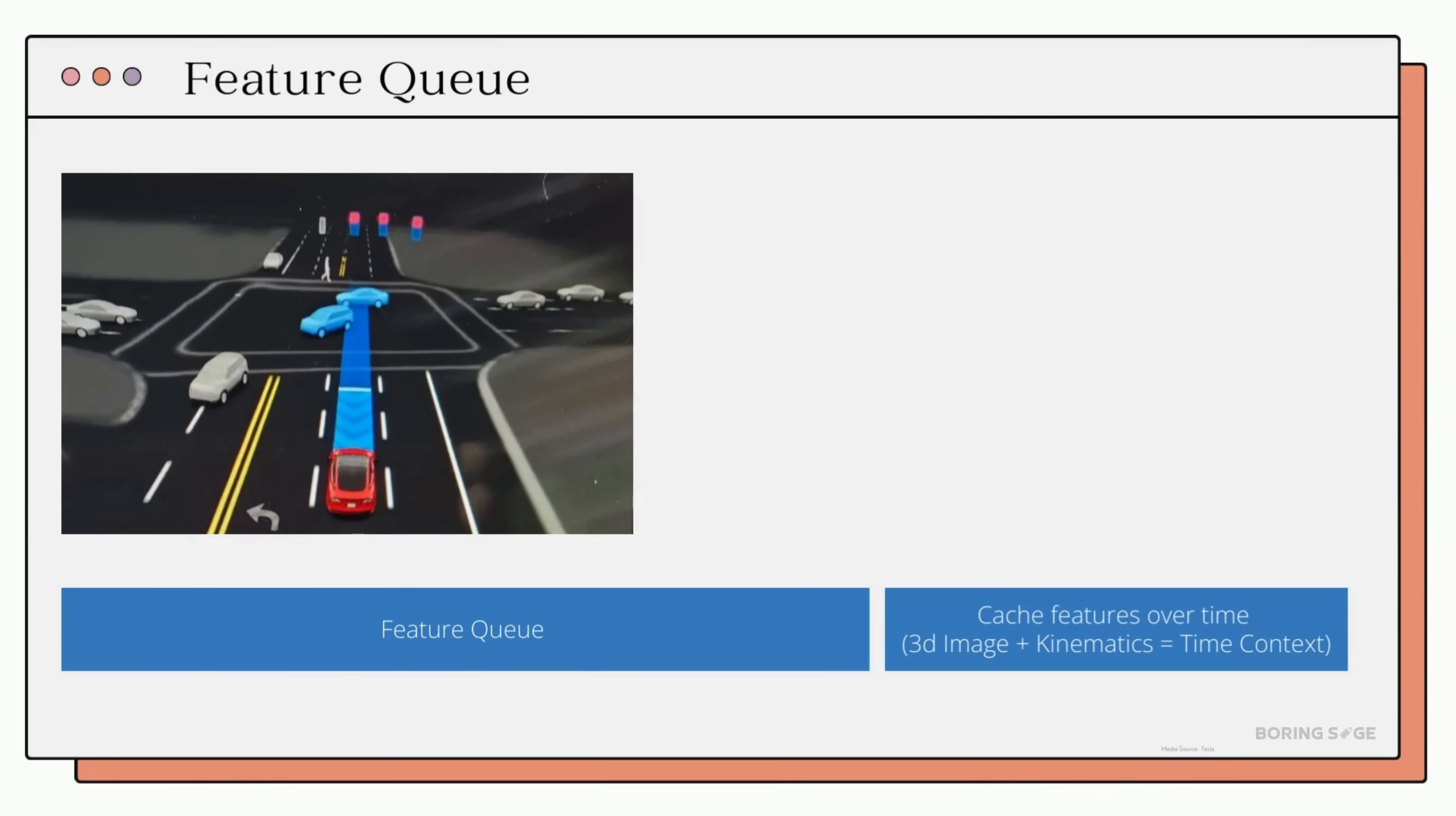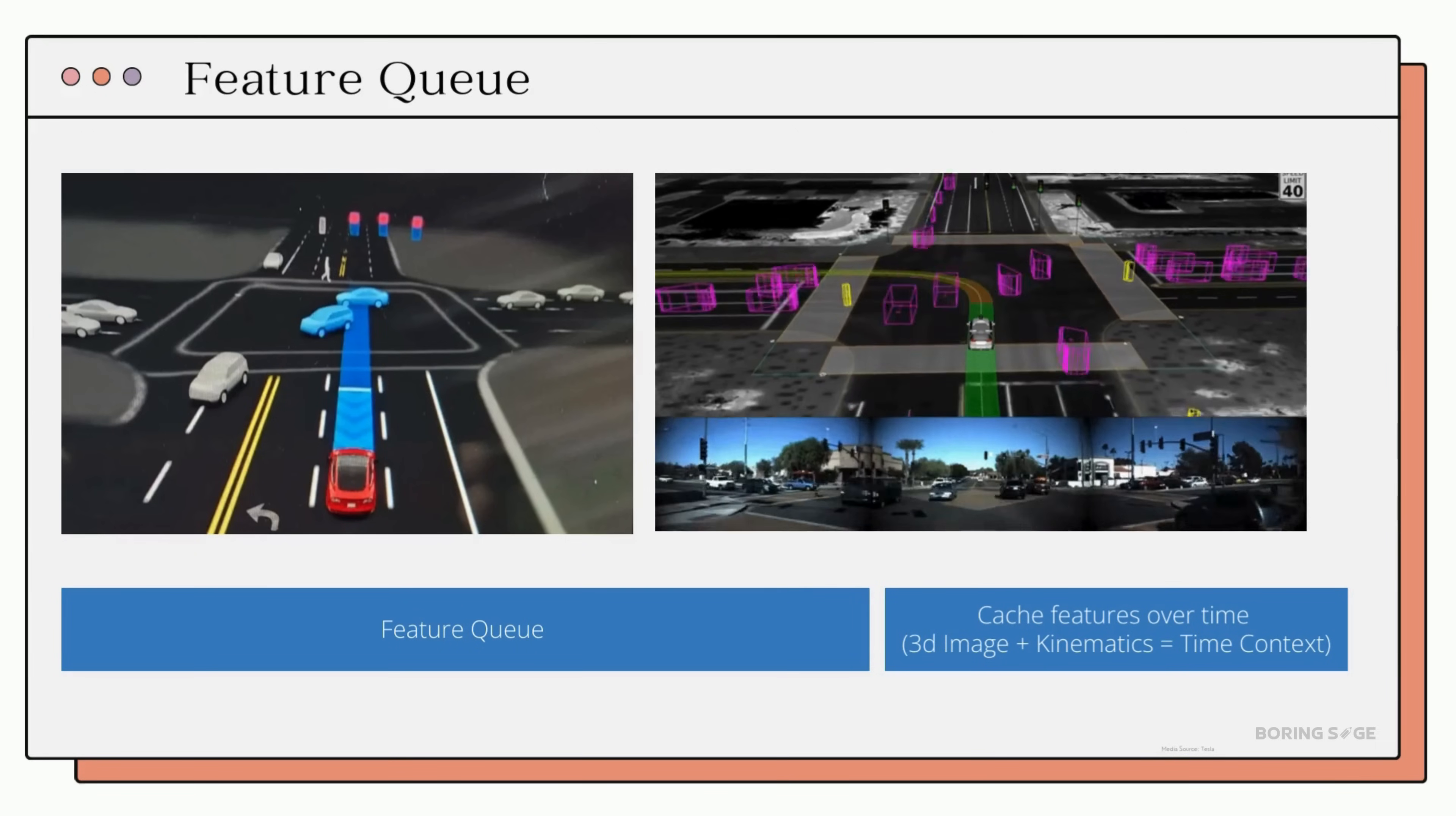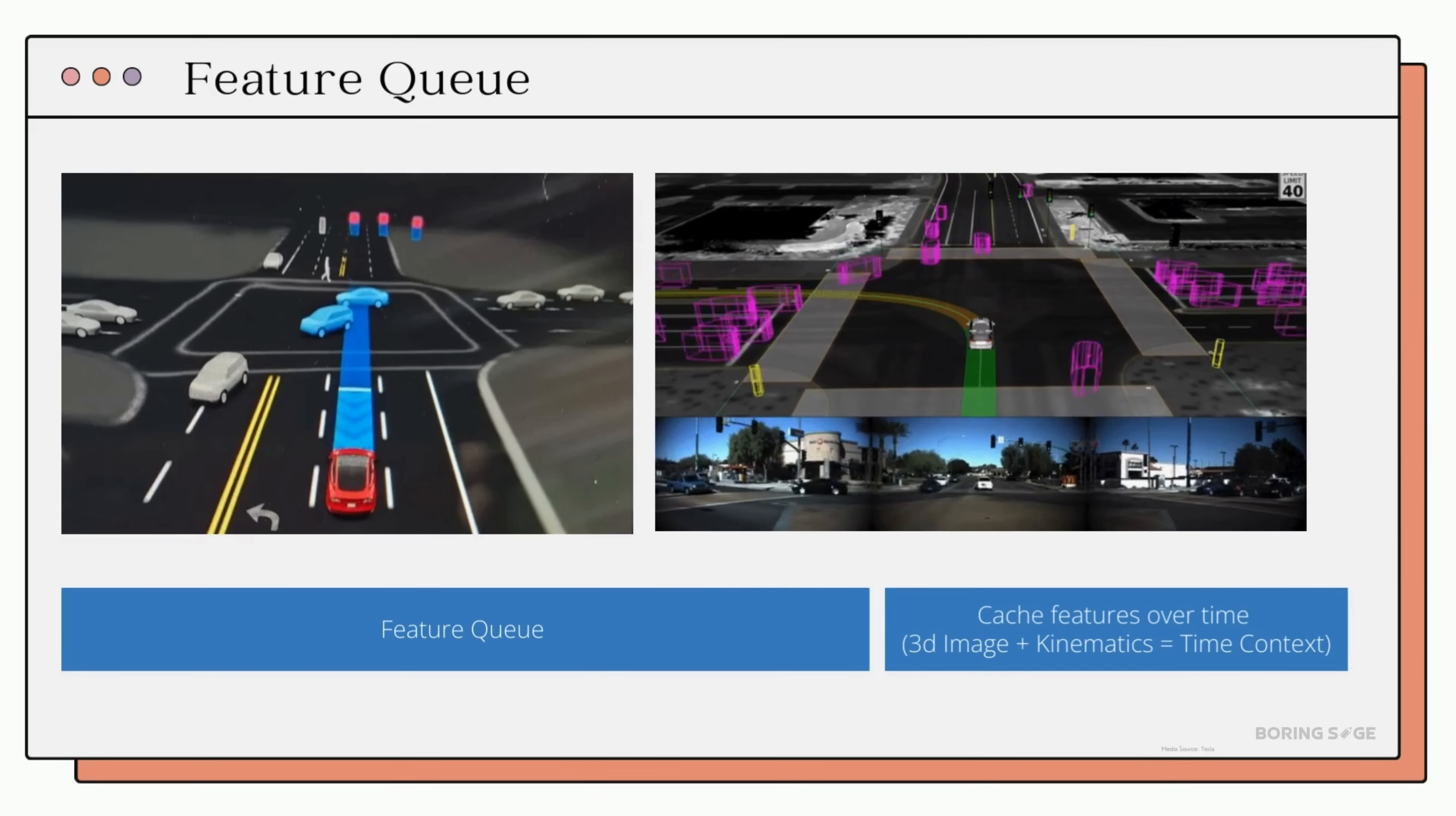For example, take a look at this scene. There are cars in front of us, on the side, and pedestrians. Wouldn't you want to know their trajectories so you can make a safe move? By tracking objects over time, Tesla can predict their future positions. For example, instead of just seeing where a car is right now at this intersection, Tesla can forecast where that car will be in a few seconds, or even for that matter pedestrians, enabling smoother and efficient decision-making for navigation.